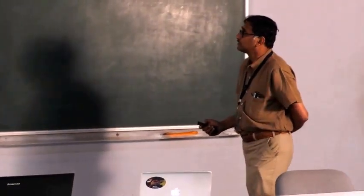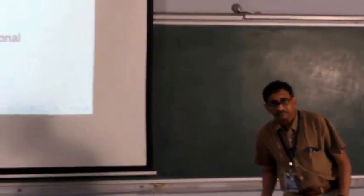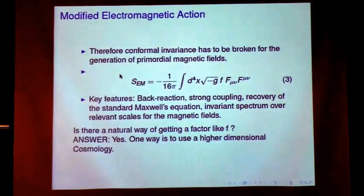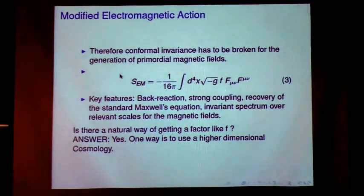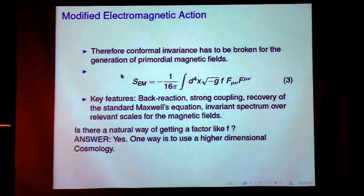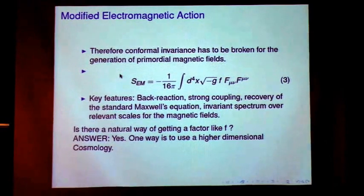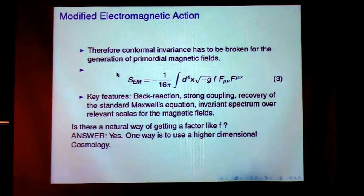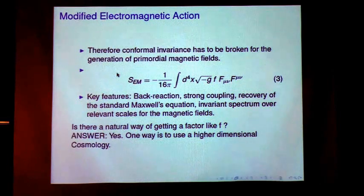Now, what one does usually to do this is to modify the electromagnetic action. And one of the simplest way to do it is to have a coefficient of f mu nu f mu nu, which is a small f, which evolves with time. Now, this f is equal to 1 or constant in the standard scenario. Now, the question is, usually this f is put rather arbitrarily. It may depend on a field, which may be an inflaton field or something. But we will be looking at a possible natural way in which we can get this f.